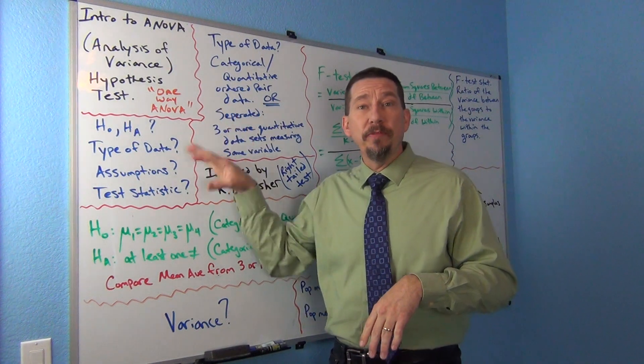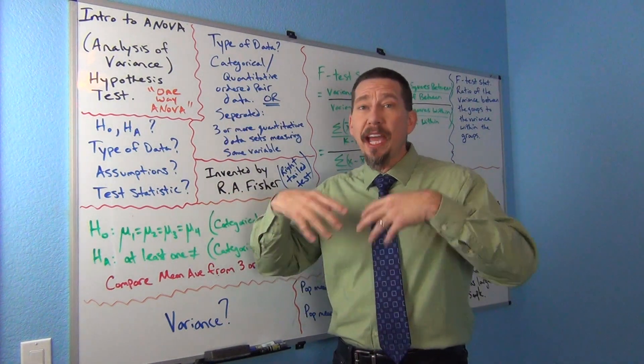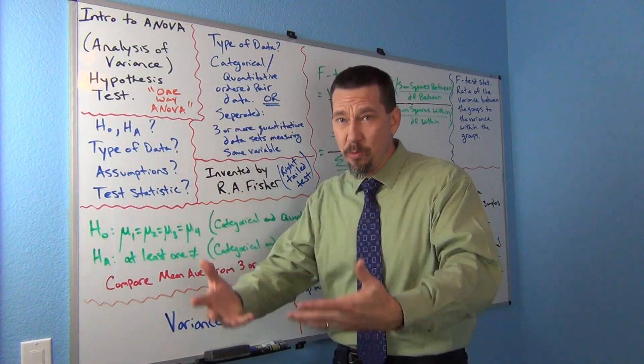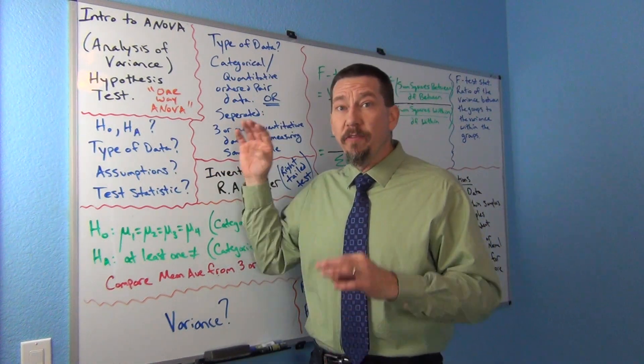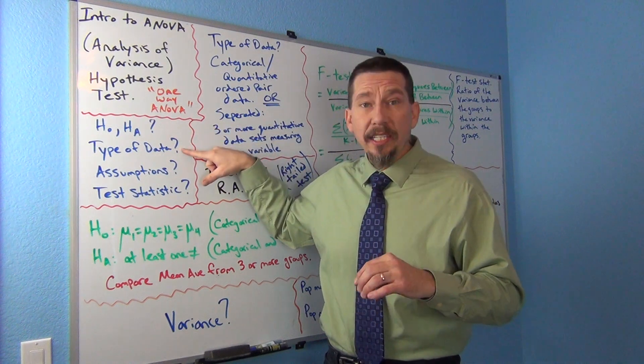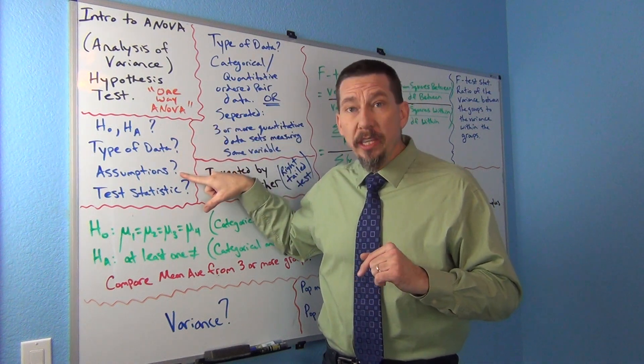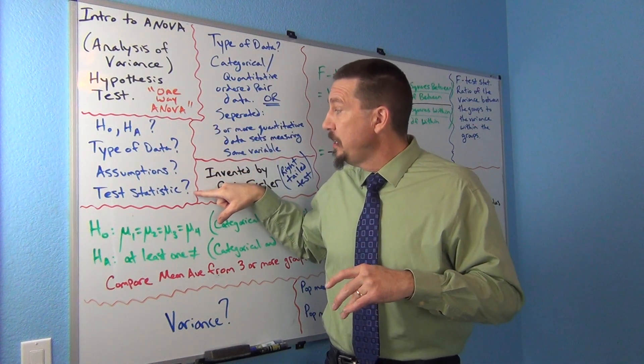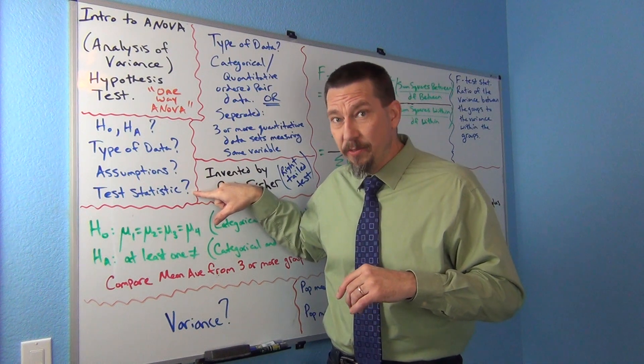Now we're just going to be introducing some of the key ideas behind the ANOVA Hypothesis Test. I think I mentioned before that now that we have an idea of how hypothesis tests work in general, we really want to focus in on four key things: The Null and Alternative Hypothesis, what type of data do we need, what are the assumptions, and what is the test statistic for this test.